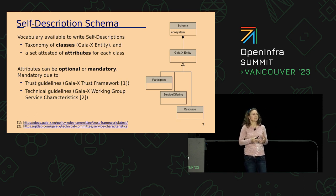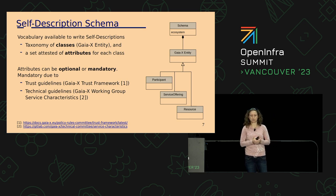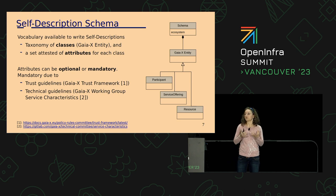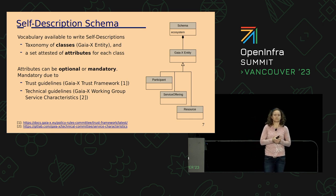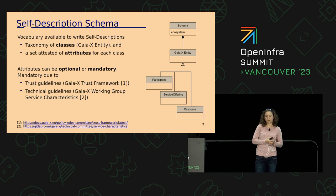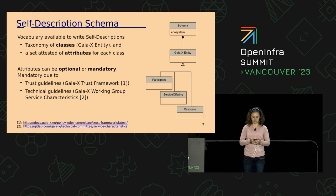Each class has a set of attested attributes. The attributes can be optional or mandatory. The mandatoriness is due to trust guidelines, and there is a special document — the trust framework from GaiaX — which defines the attributes which have to be there in order to be GaiaX compliant. Mandatory can also be due to technical guidelines. For example, a technical mandatory attribute is the service endpoint to access a service. And these properties are defined by a special sub-working group of GaiaX: the Service Characteristics working group.